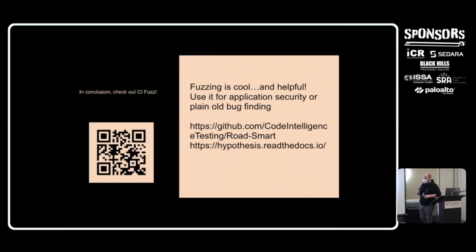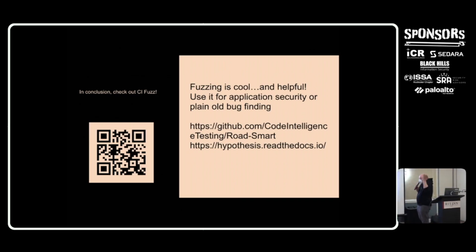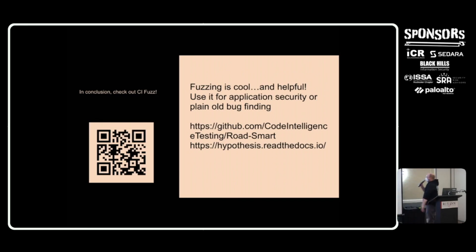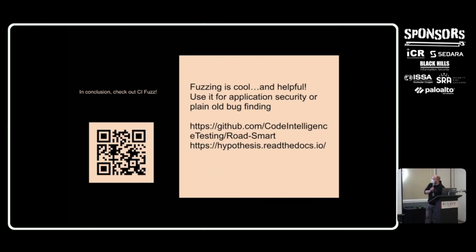In conclusion, fuzzing is really cool. It's an interesting use of test automation and a neat application of computer programming. You can use it for a whole array of finding bugs or finding security exploits. If you'd like to see the example I wasn't able to show, you can go to the GitHub project 'road smart' — a very simple CRUD application. Definitely play around with it. You can also scan the QR code to download CI Fuzz. Thank you very much — I'm around, I have stickers, and I'll take questions.